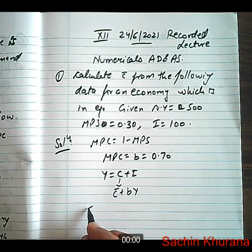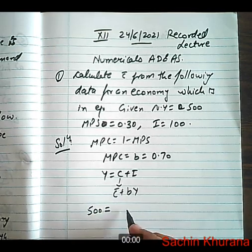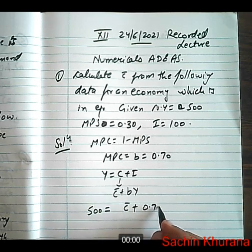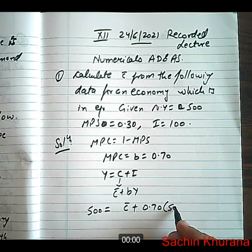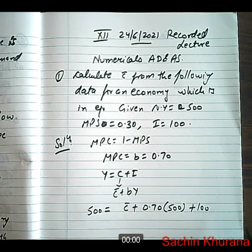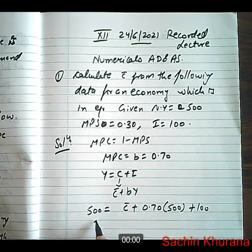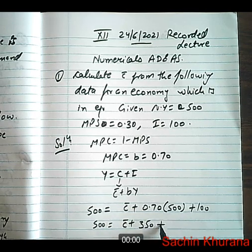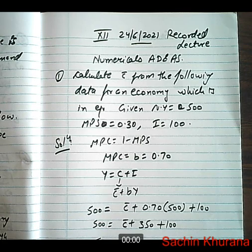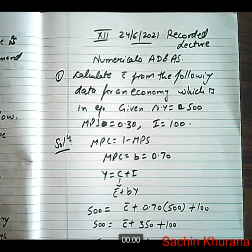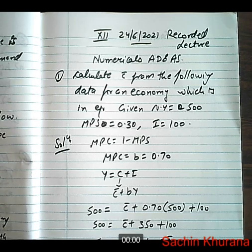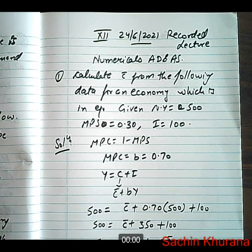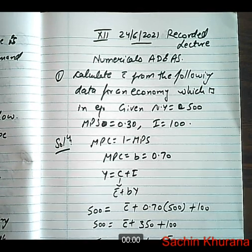Substituting the figures: 500 is equal to C bar plus 0.70 into 500 plus I, that is 100. So we get 500 is equal to C bar plus 350 plus 100. So 500 minus 350 minus 100 is equal to C bar, which gives us C bar is equal to 50. So autonomous consumption expenditure is equal to 50.